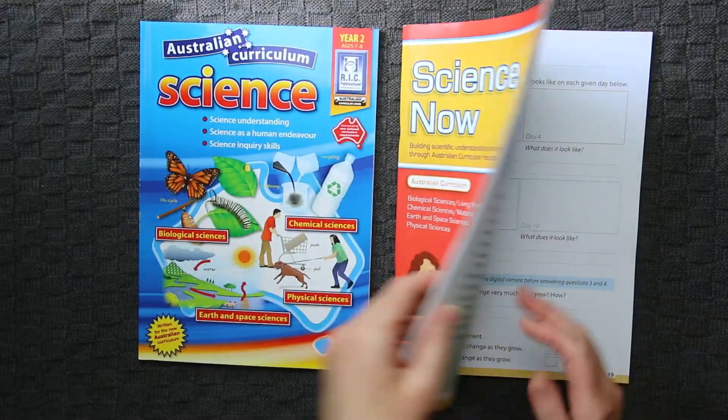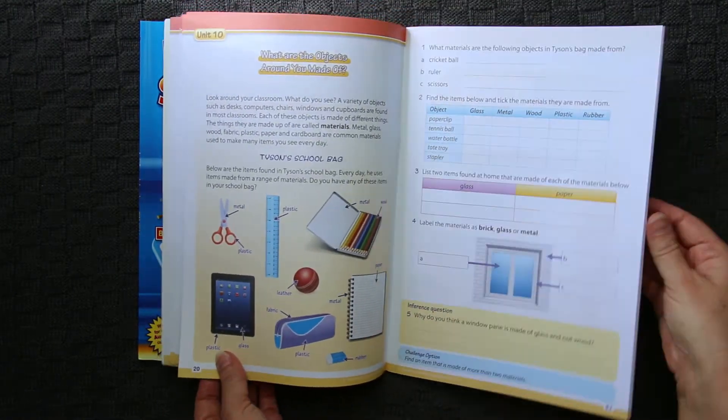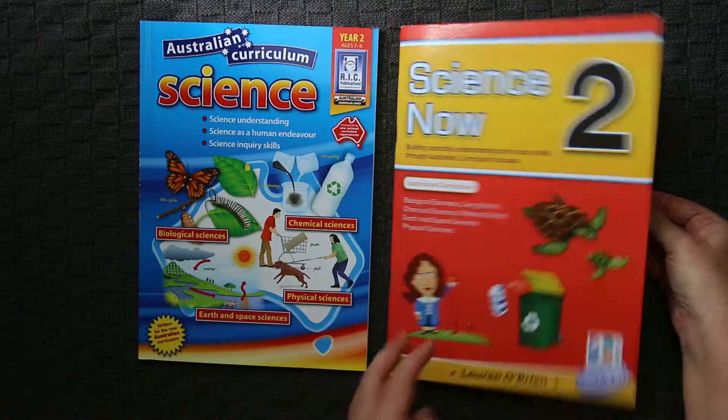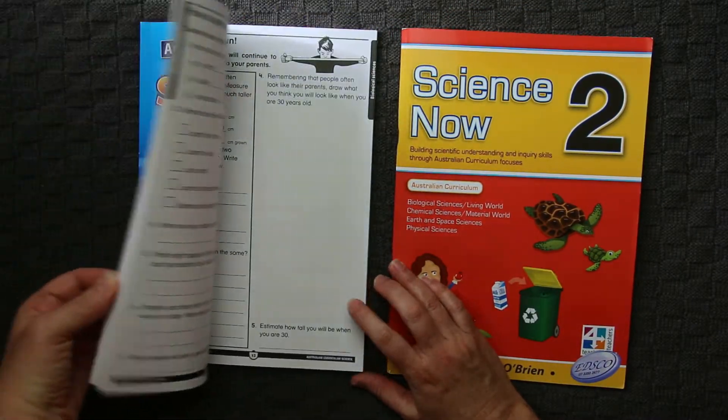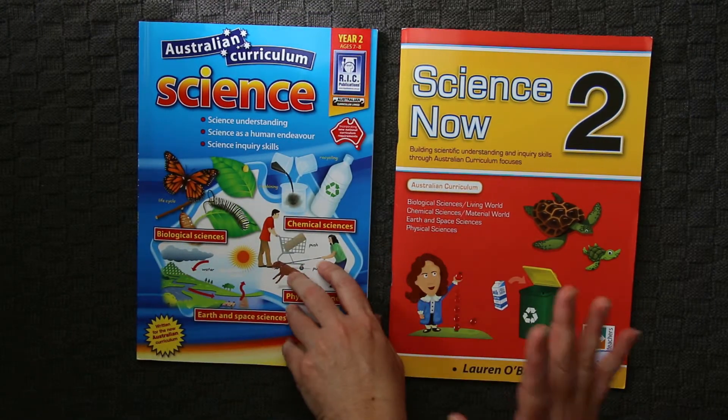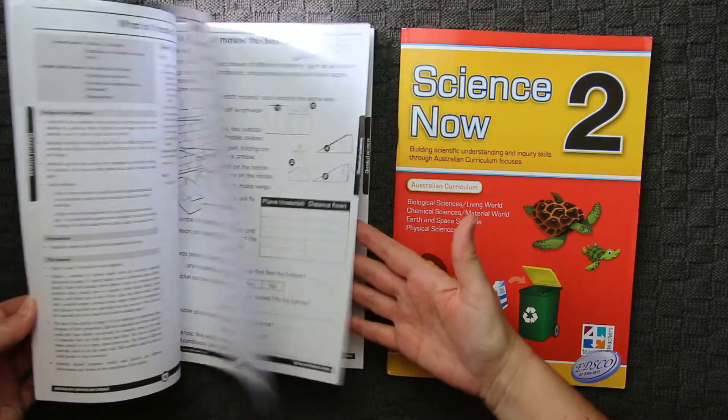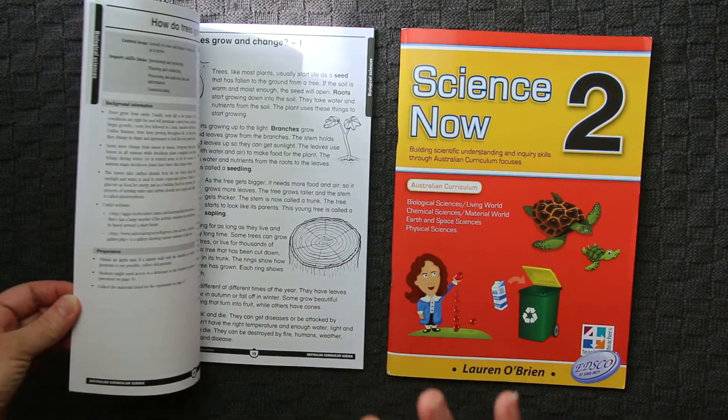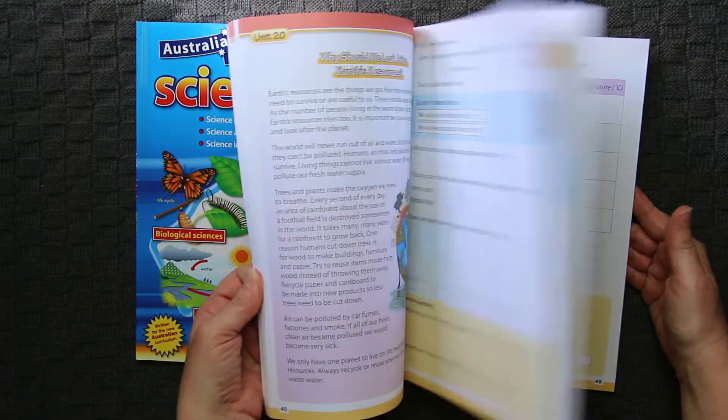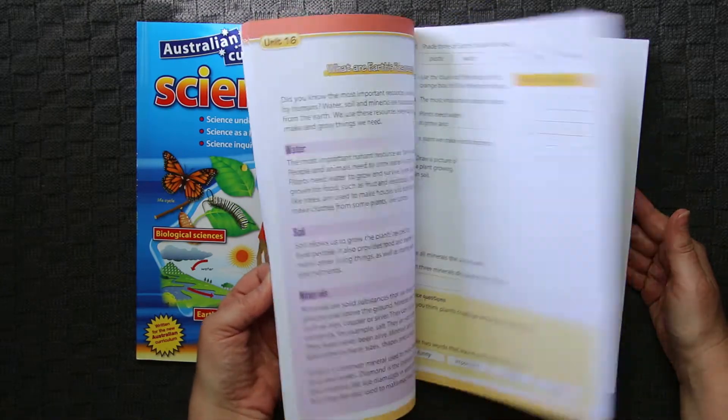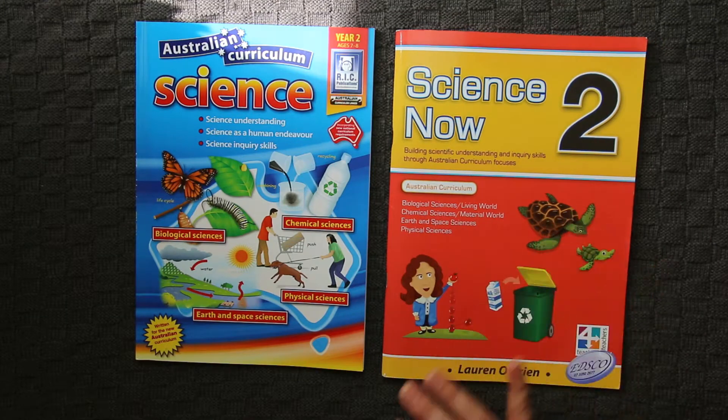When we open them up, the first thing that you'll notice about this particular one is that it's full color, whereas this one is all black and white. The other difference that really stands out to us is the amount of information that's in this one. This is a busier, seems to be a more information-rich workbook, whereas this one is generally simpler to look at. Let's dig in a little bit more.